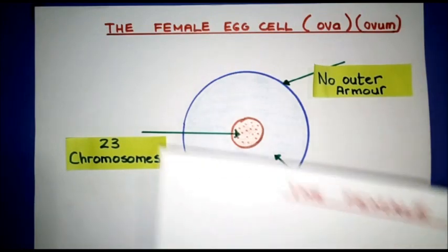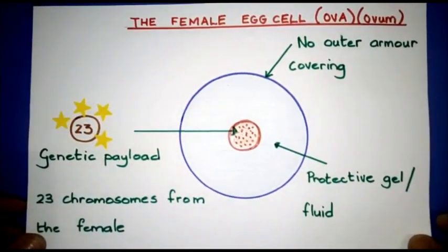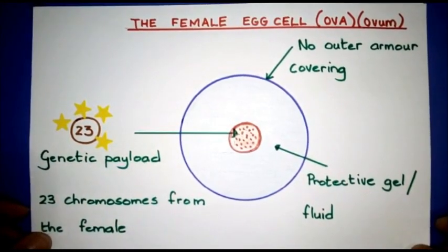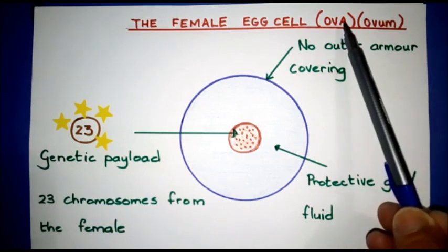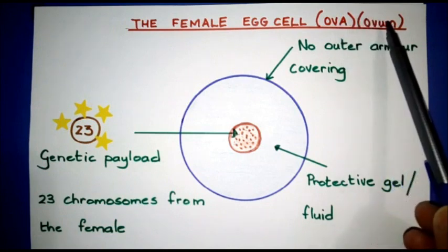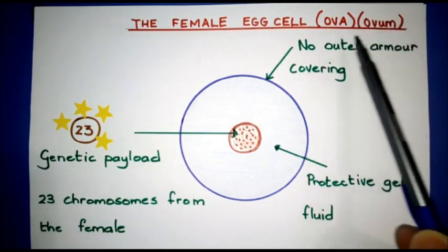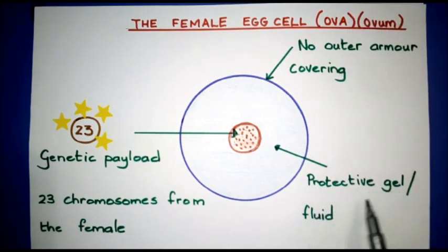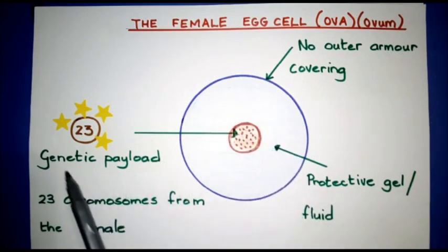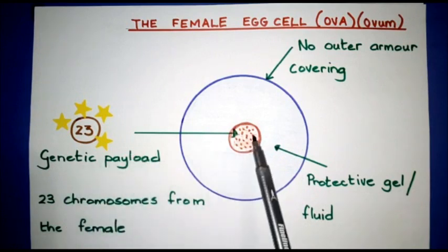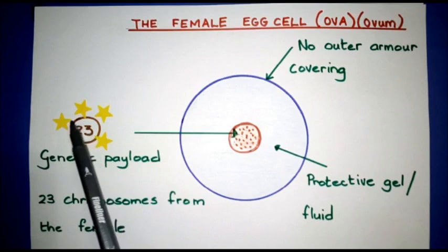Okay, what Mr. Mac has done now is I've taken it and put it all together. So there you have it, I've summarized it. Female egg - ova is more than one, ovum is one egg. There's no outer covering. There's a protective gel or a fluid that protects whatever's on the inside of the egg. The genetic payload in the middle is 23 chromosomes from the female, and I've highlighted the 23.